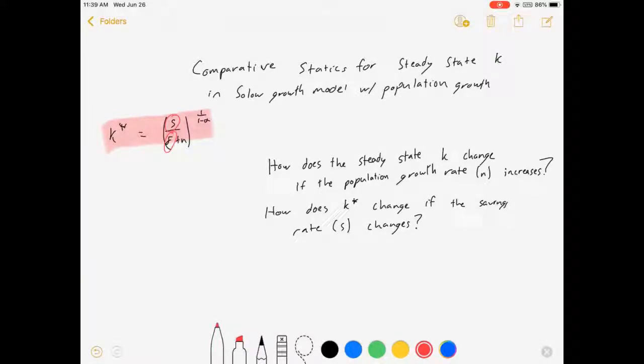It's a function of capital depreciation rate delta, it's a function of population growth rate N, and it's also a function of alpha, which is just a parameter that tells us how much capital matters in our production function.